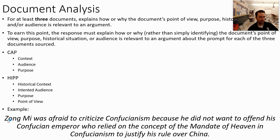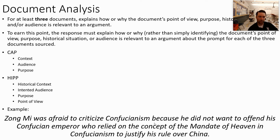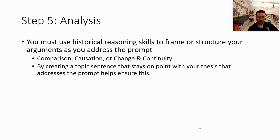For example, Han Yu, a Chinese Confucian scholar, talks about Buddha and Confucius being the perfect sages — meaning they bring balance to one another. He's one of the scholars who opens the door for Neo-Confucianism itself. Here's an example of how to use that in a way where you are actually analyzing the documents, showing their context and significance to your argument rather than just restating their content.